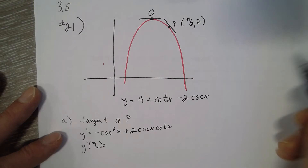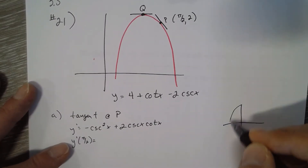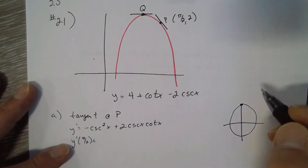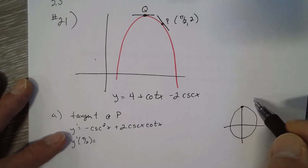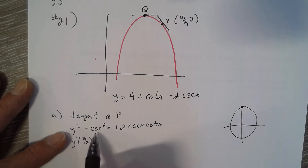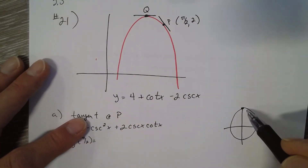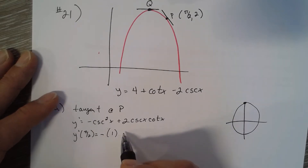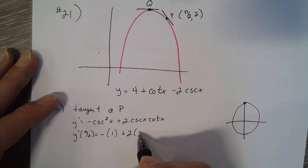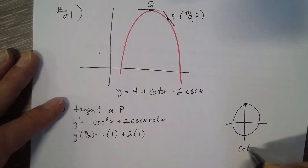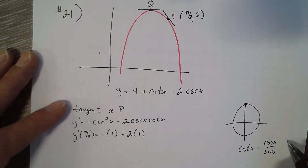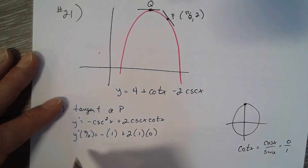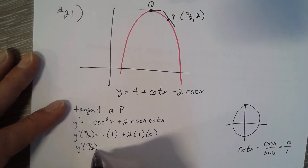Plugging in π/2: on the unit circle, π/2 is at the top, so cosecant is 1 over sine of π/2. The sine of π/2 is 1 (the y-value), so cosecant of π/2 is 1. We get negative 1 squared, which is negative 1, plus 2 times cosecant(π/2) which is 1, times cotangent(π/2). Cotangent is cosine over sine — cosine of π/2 is 0, sine is 1, so cotangent is 0. The derivative at π/2 is just negative 1.